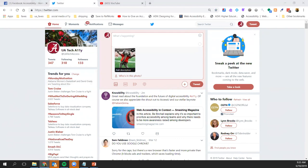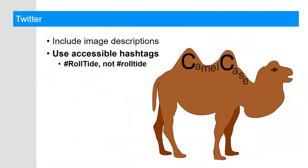Another thing you can do when using Twitter is to use accessible hashtags. The hashtag #RollTide formatted with all lowercase letters versus with each word capitalized makes a significant difference for screen readers. If each word is capitalized, the screen reader will recognize and read it as an individual word within the hashtag. If it's not capitalized, words may run together in a way that makes the hashtag very difficult to understand. If your hashtags include compound words or phrases, write them so each word begins with a capital letter — this practice is known as camel case.